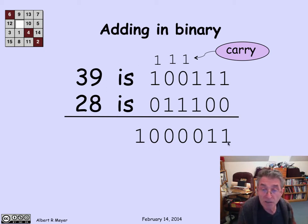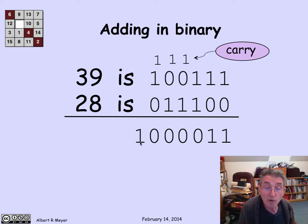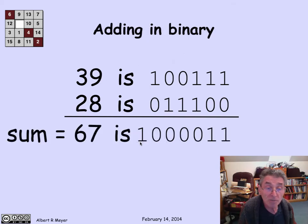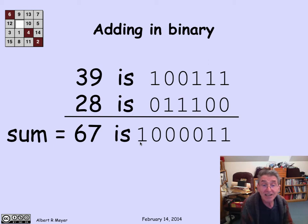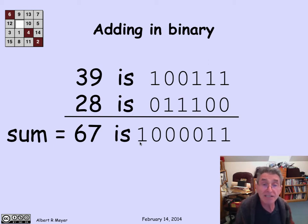This is the binary representation of the sum. You can check that this is 1 plus 2 is 3 plus 64, so the answer should be 67. And you can check that it is. So that's how binary addition works.